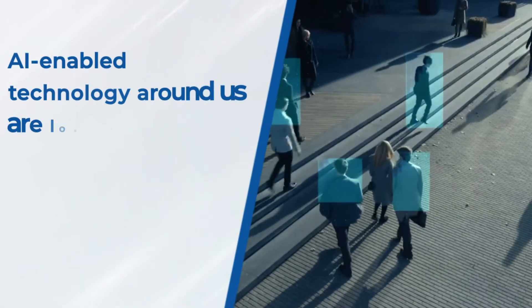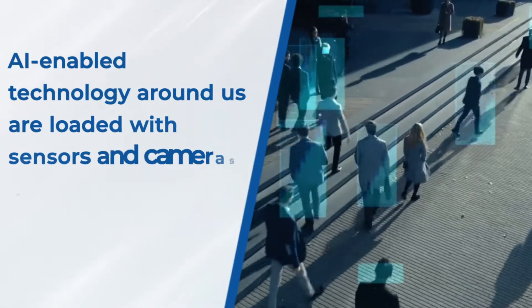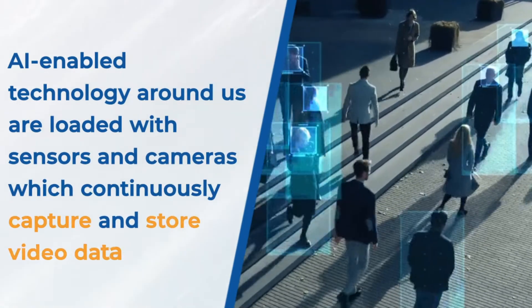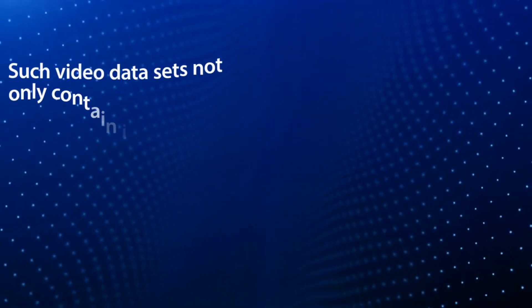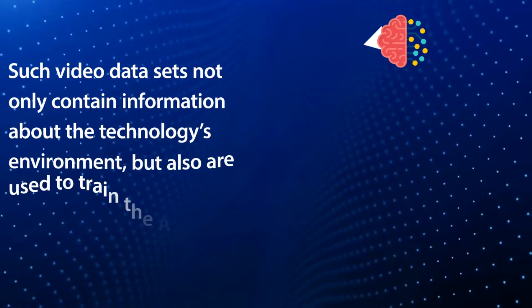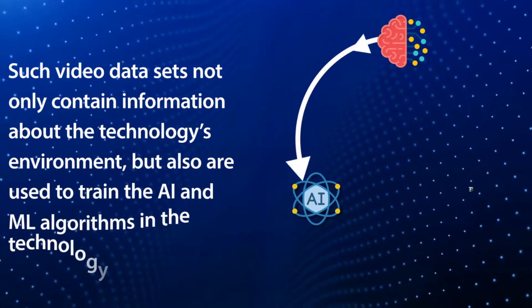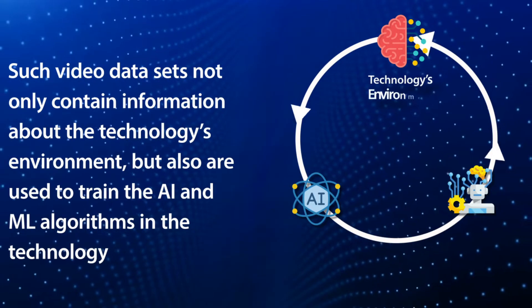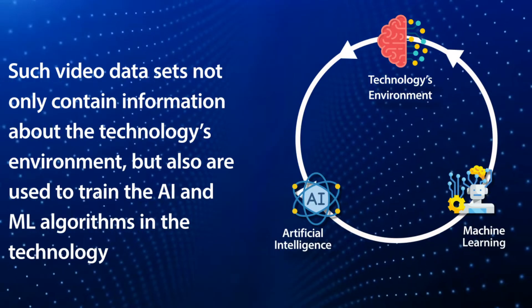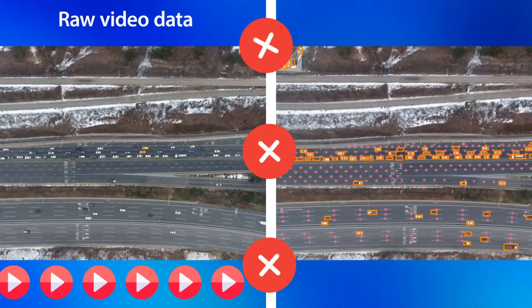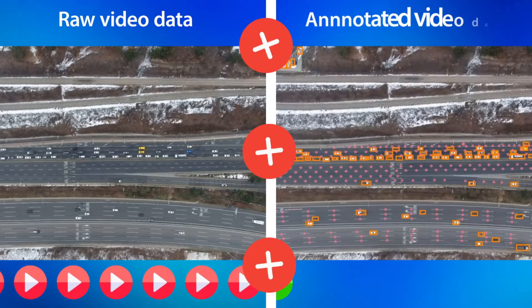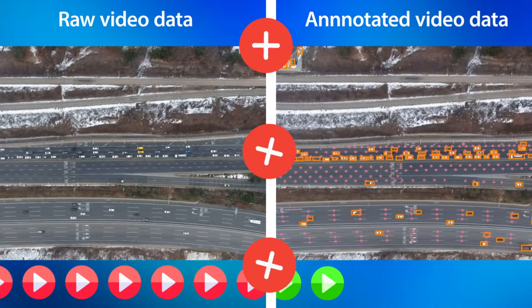AI-enabled technologies around us are loaded with sensors and cameras which continuously capture and store video data. Such video data sets not only contain information about the technology's environment, but also are used to train the AI and ML algorithms in the technology. Video in its raw nature cannot be understood by any AI technology and has to be prepared using the process of video annotations.